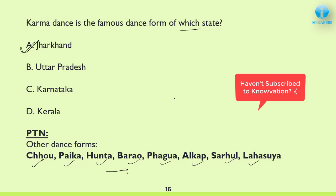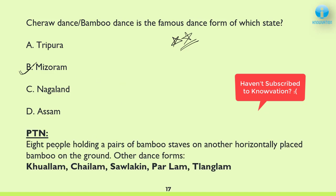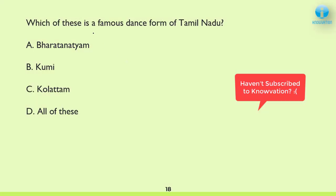Next: Cheraw Bamboo Dance is the famous dance form of which state? The correct answer is Mizoram. Eight people hold a pair of bamboo staves on another horizontally placed bamboo on the ground, and that's how they dance. Other important dance forms of Mizoram include Khawlam, Chaylam, Saulakin, Parlam, and Danglam.